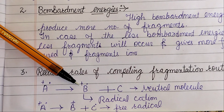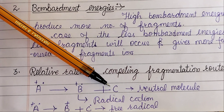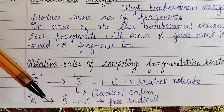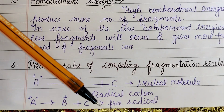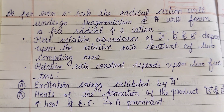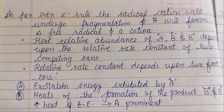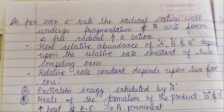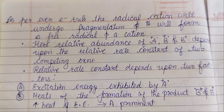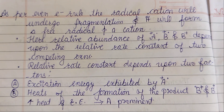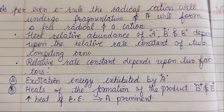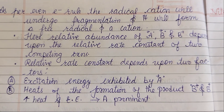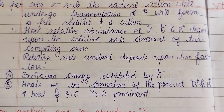The molecular ion is a radical cation. We also have a neutral molecule. In the next step, the molecular ion can exist as a cation and a free radical. As per the even electron rule, the radical cation will undergo fragmentation to form a free radical and a cation.